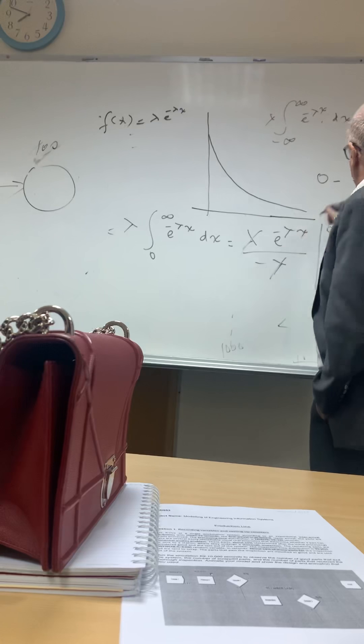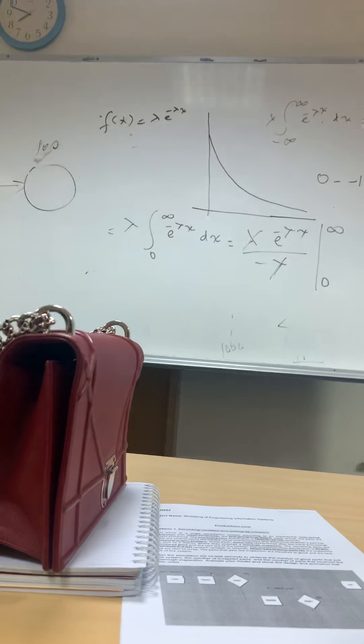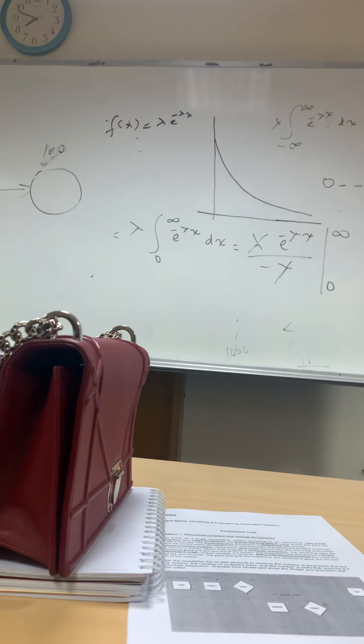Minus at zero is minus one, equal one. Is that clear? Now if we ask you what's the probability that x is between three and five, integration.